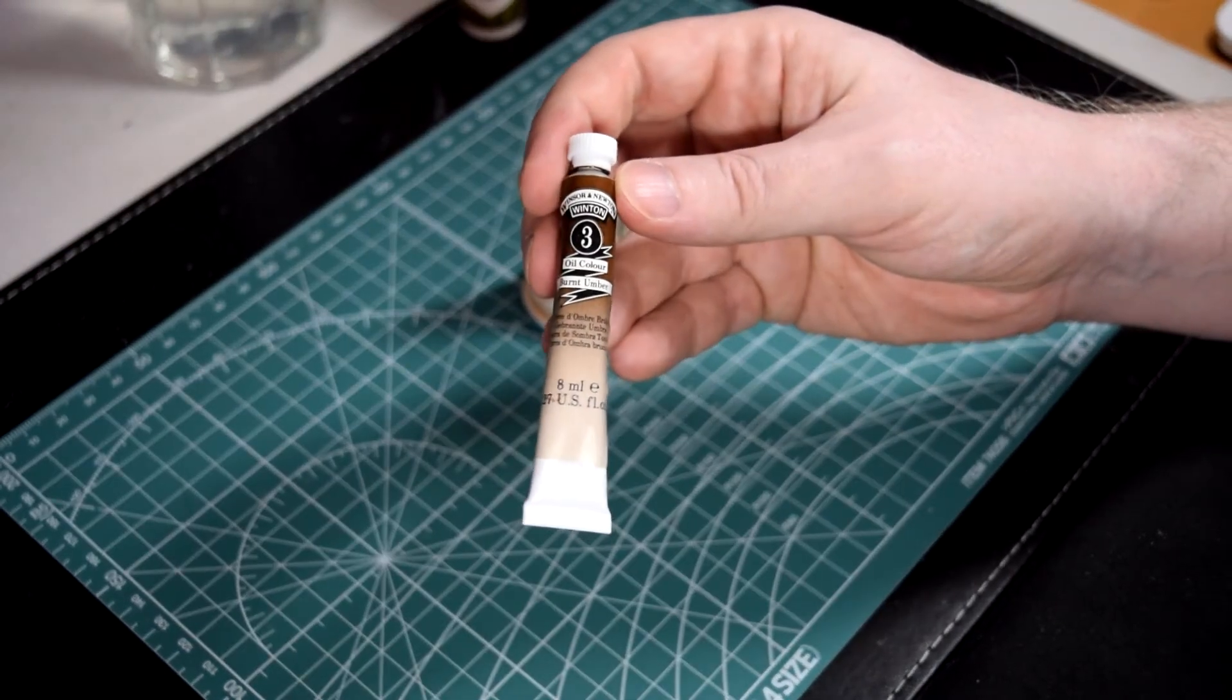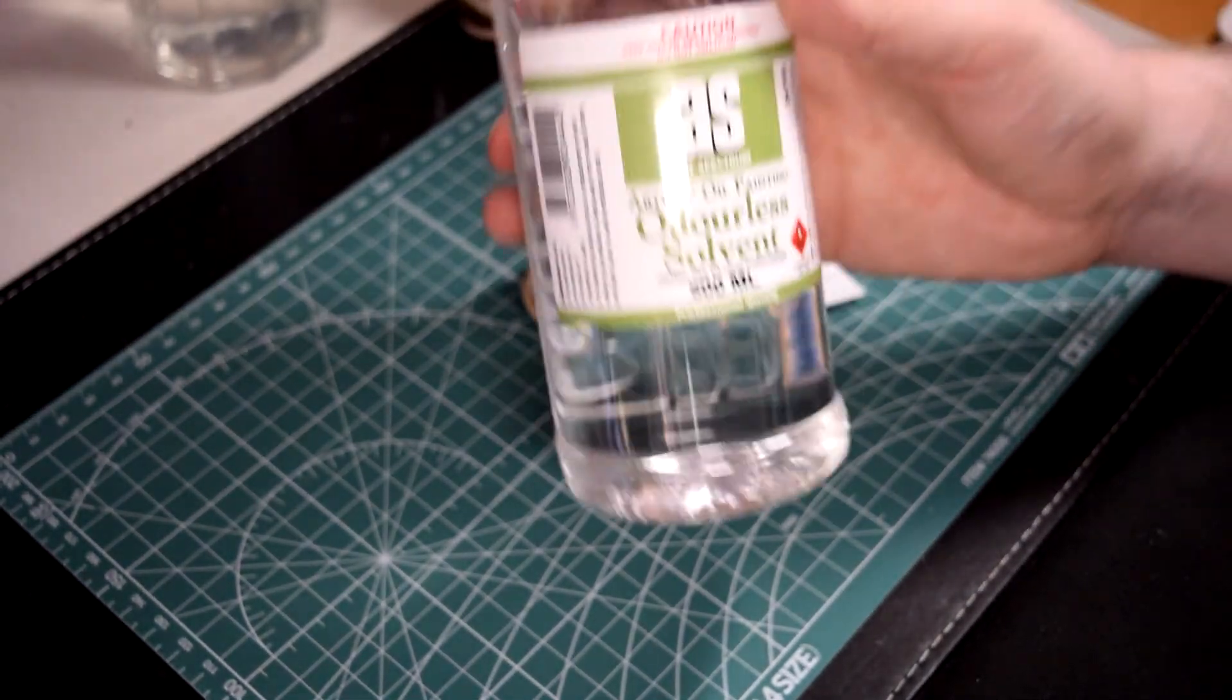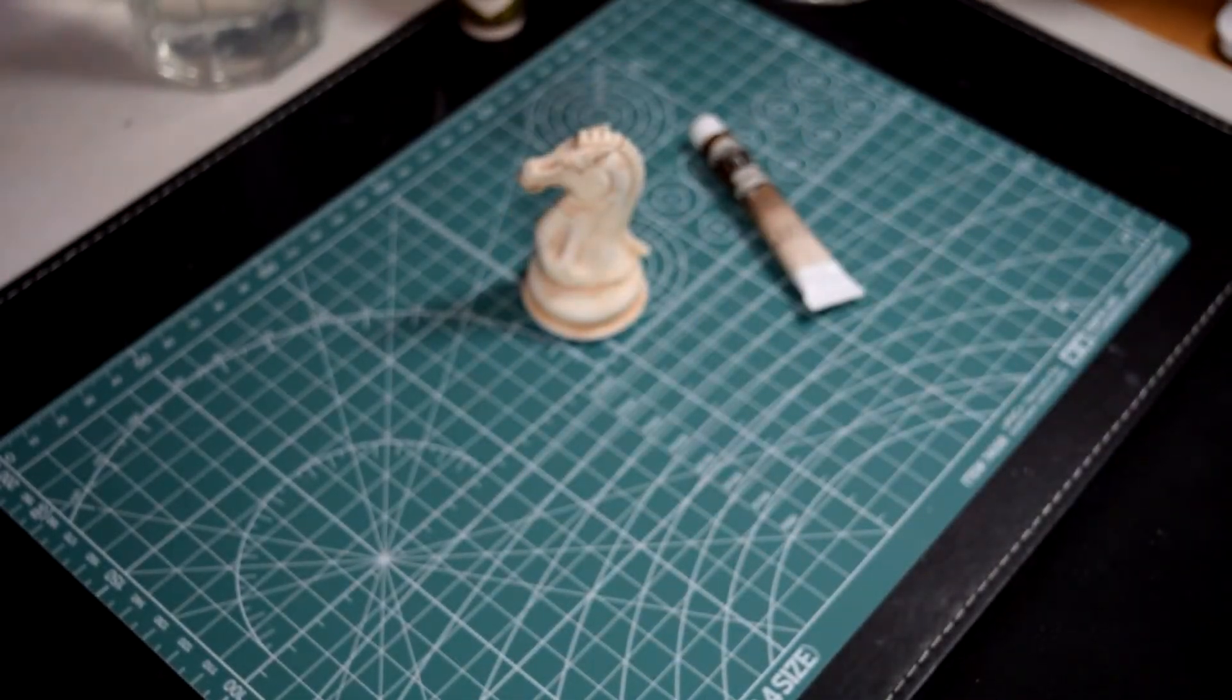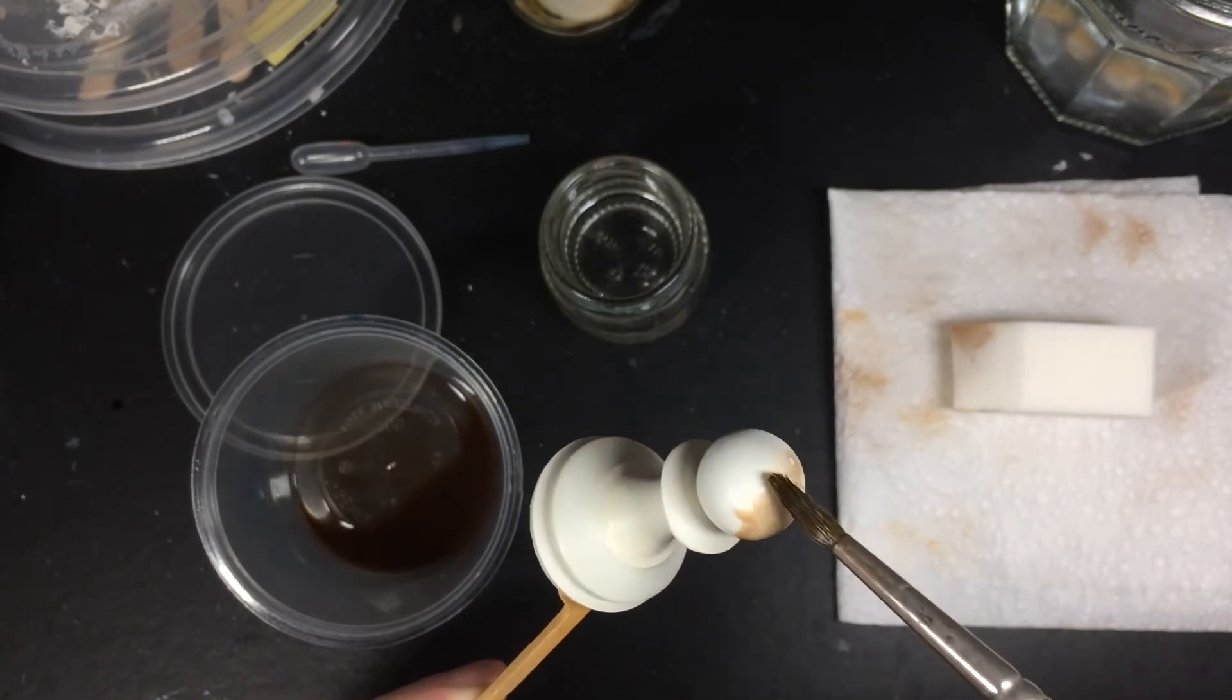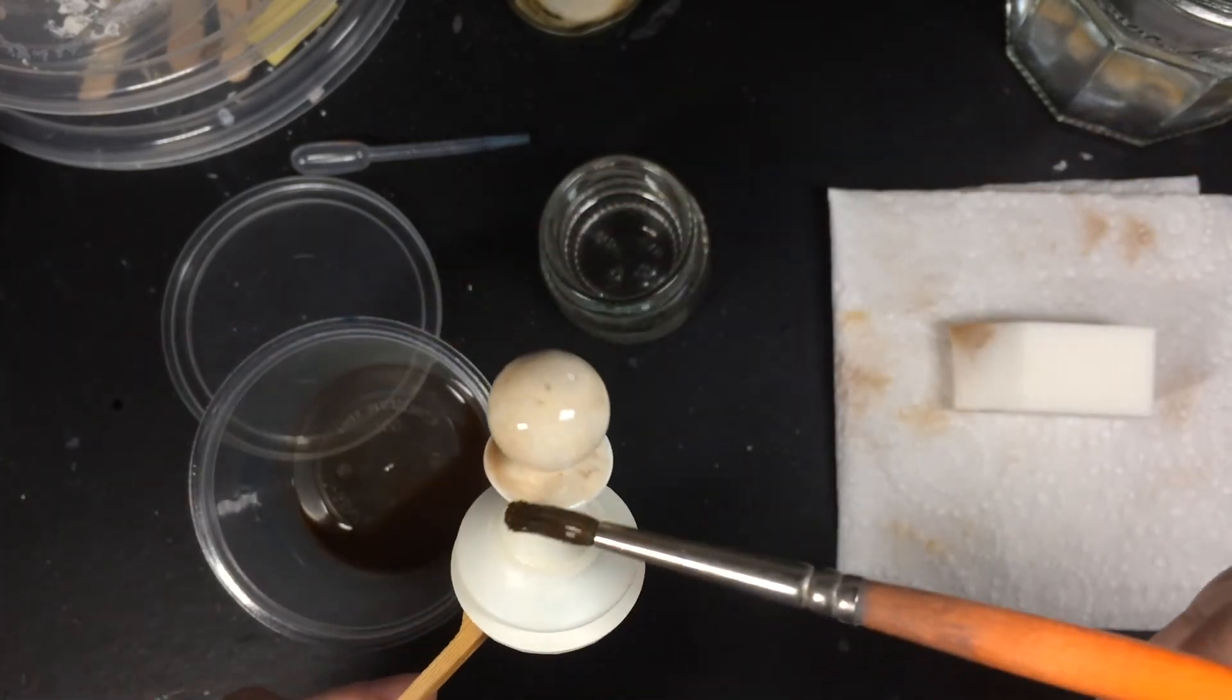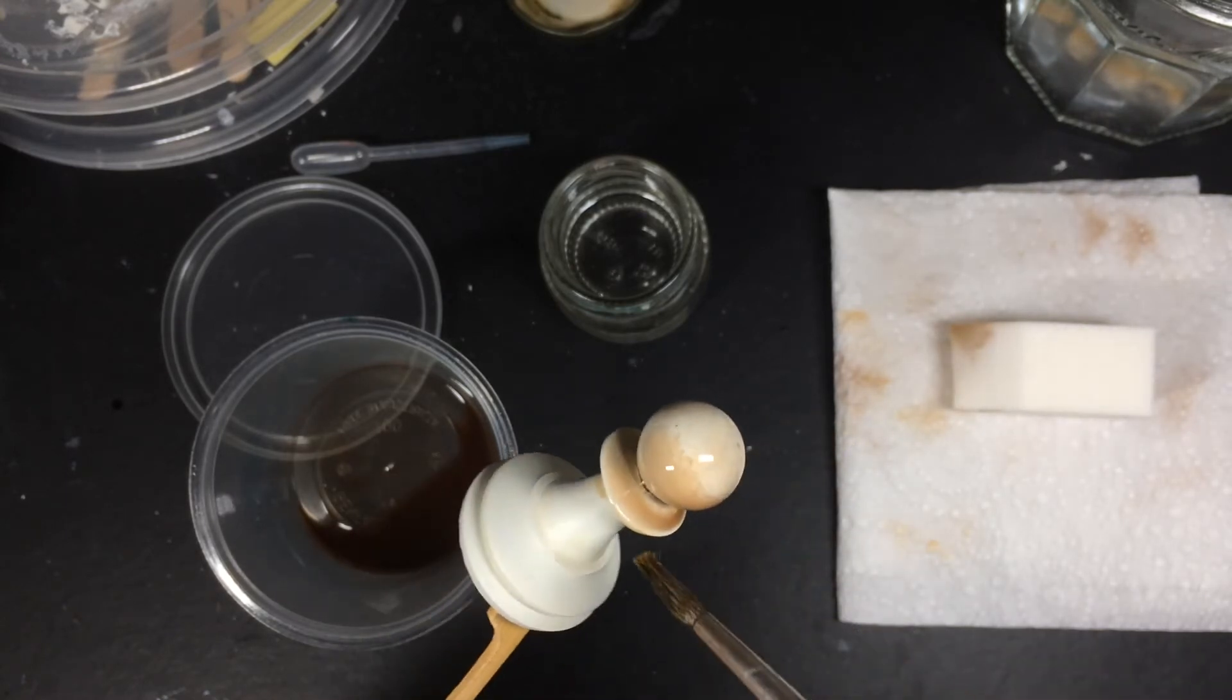You'll need to dilute your oil paints with solvent, like this. And the ratio is about 20 drops of solvent for one drop of oil paint. So it's extremely thin. You can see here that it's basically a glaze or a wash. There's very little oil paint needed. Just apply the paint over the whole chess piece.